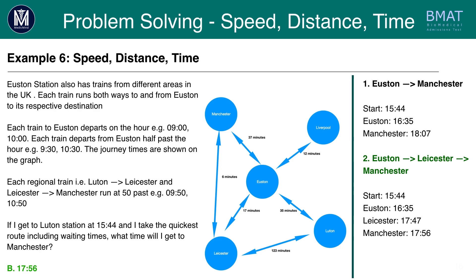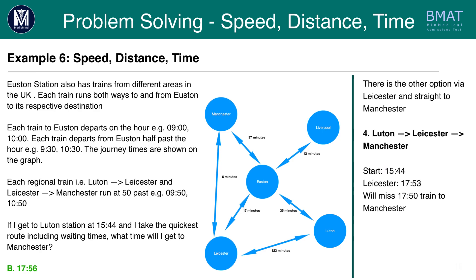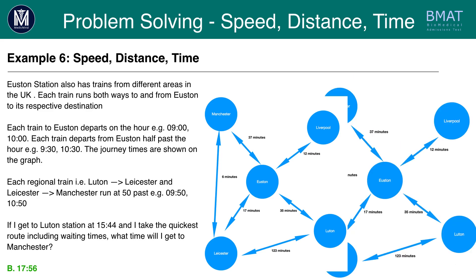There is one other option: going from Luton to Leicester to Manchester directly. If she goes to Leicester she will get the train at 1550 and arrive at Leicester at 1753. Unfortunately this means she will miss the 1750 train straight to Manchester. So that's not really an option. Her best option is option two, arriving at 1756, which is answer B.